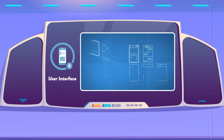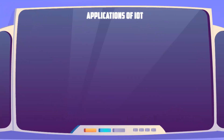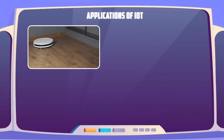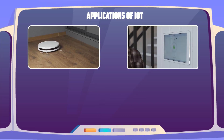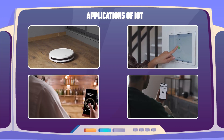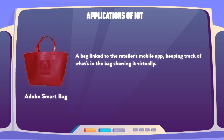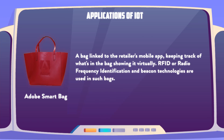User interface is how a user is presented with the information to analyze and make a decision. First IoT application is Smart Homes — unlocking doors, switching on lights and the AC, and adjusting its temperature according to the weather are some of the features of smart homes. Second is Smart Bags. An example is the Adobe Smart Bag, a bag linked to the retailer's mobile phone, keeping track of what's in the bag and showing it virtually. RFID or Radio Frequency Identification and Beacon technologies are used in such bags.